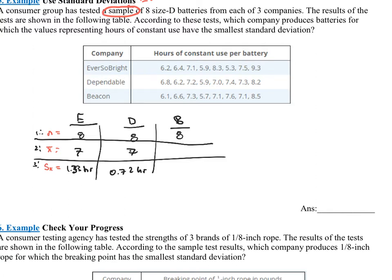And then I'm looking at beacon. Put beacon into your calculator. Run those one-var stats. I'm getting, again, an average of seven hours, and I'm getting a sample standard deviation of 0.88 hours.